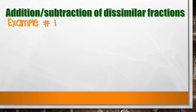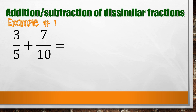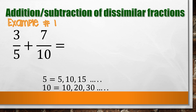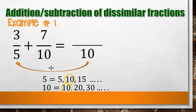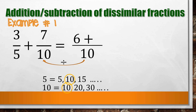Example number 1: 3/5 plus 7/10. Since this is a dissimilar fraction, we find the LCD by identifying the least common multiple of both denominators. The least common multiple of 5 and 10 is 10, which will be our new denominator. To change the fractions to similar fractions, divide the LCD by each denominator: 10 divided by 5 equals 2, then multiply by the numerator — 2 times 3 equals 6. For the second fraction, 10 divided by 10 equals 1, multiplied by 7 equals 7.